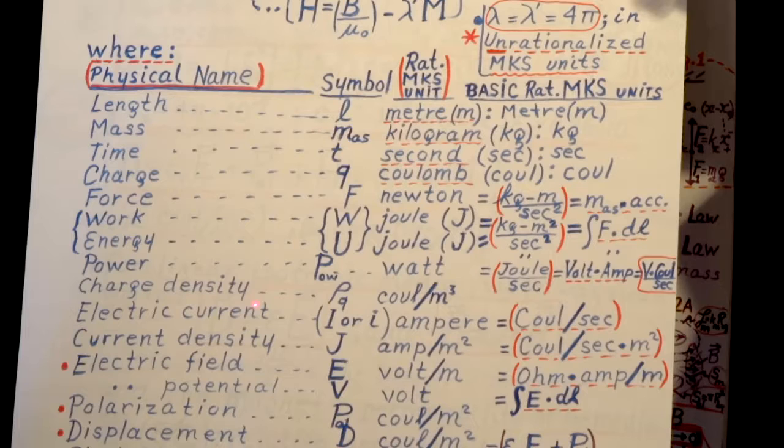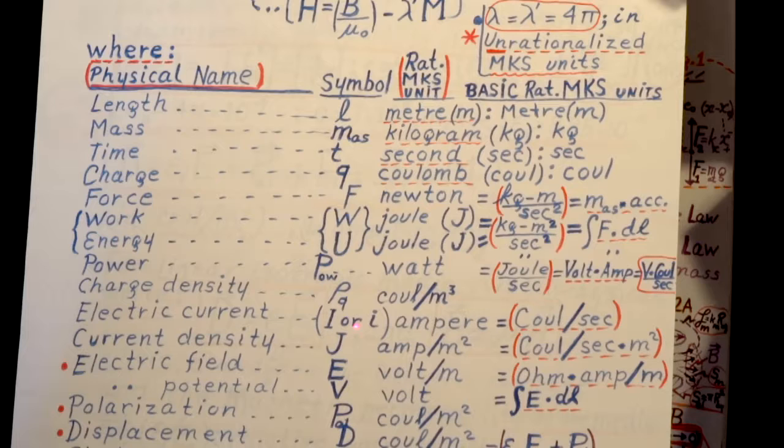Then you have power in Watt, charge density rho Q because it's charge density, Q for charge. Electric current I or small r. Current density J in English. Electric field E.